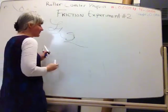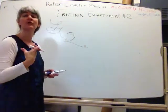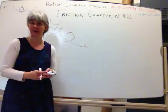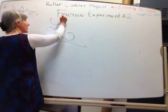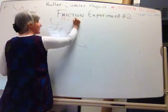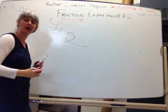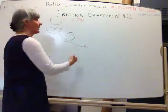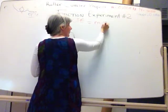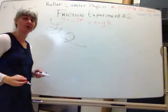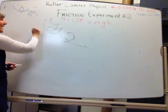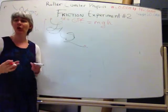At the very beginning, your total energy is equal to the gravitational potential energy of that beginning spot, which is going to equal the mass of your marble times the acceleration due to gravity times the beginning height. And that should be your total energy.